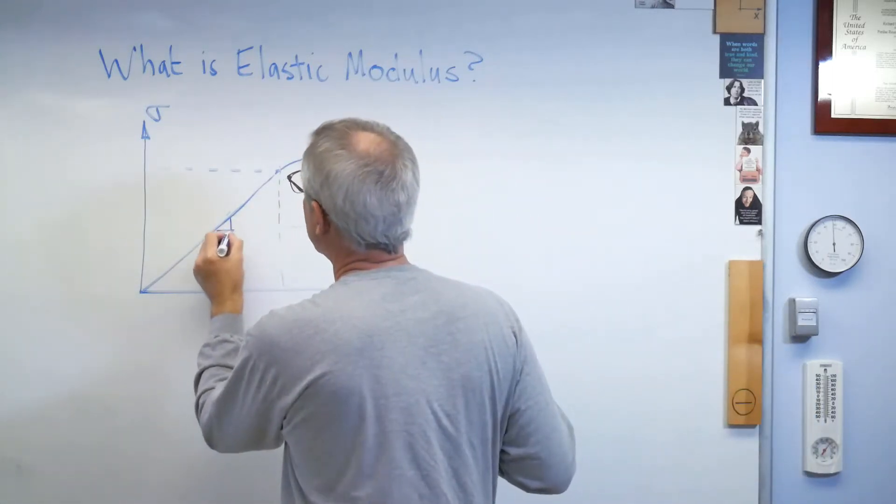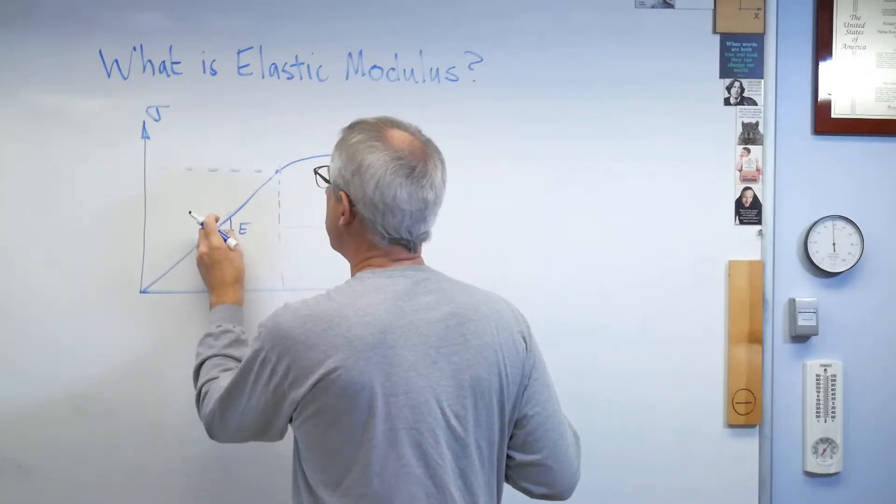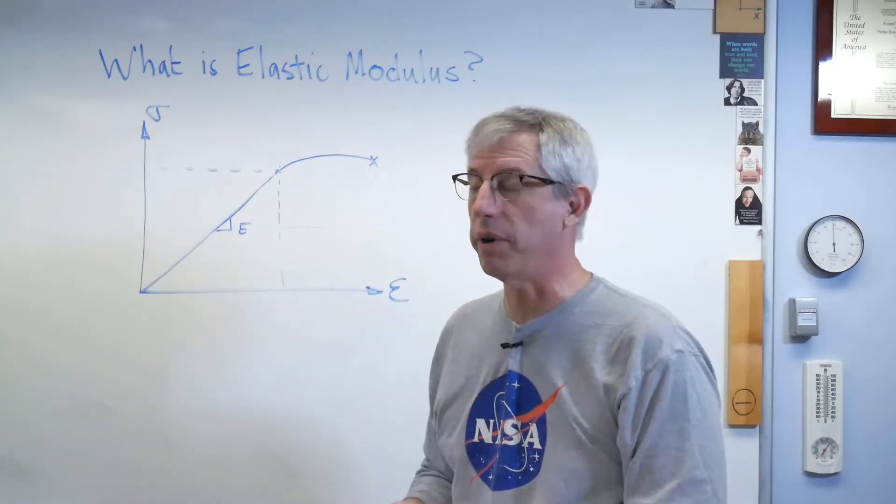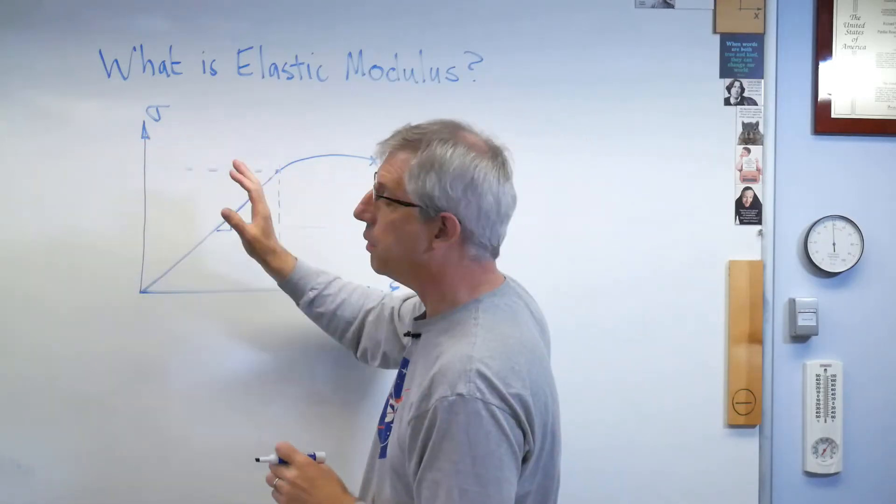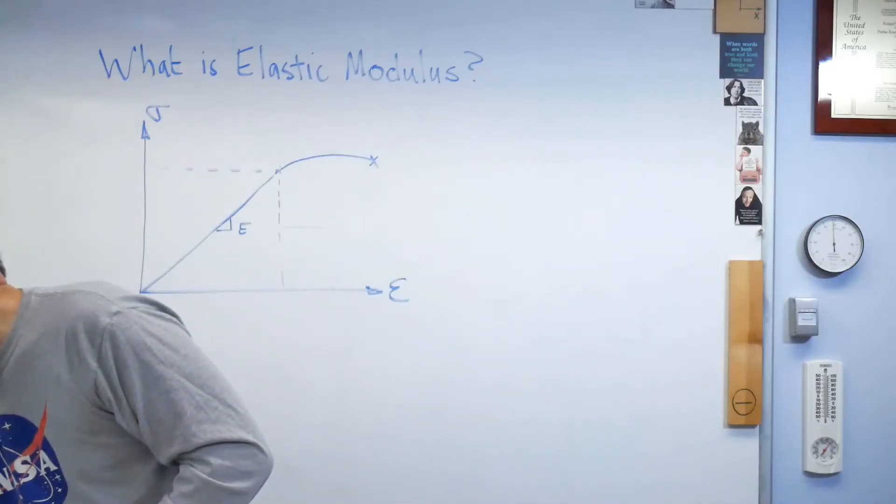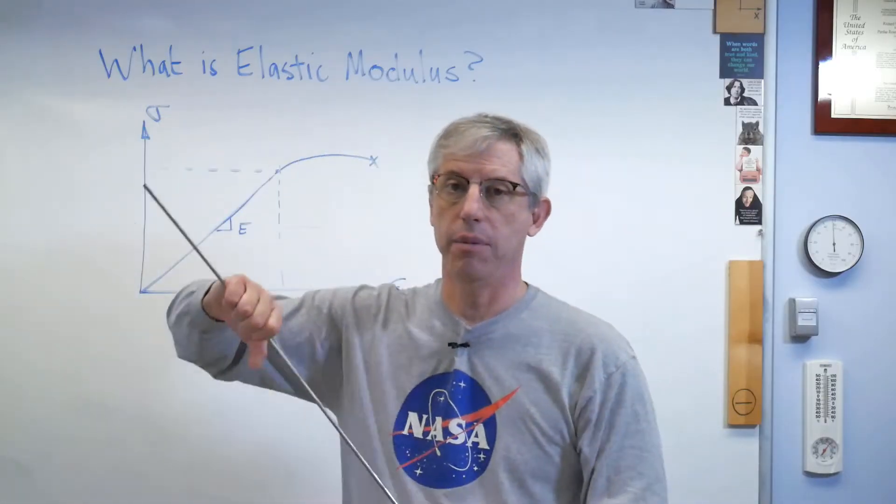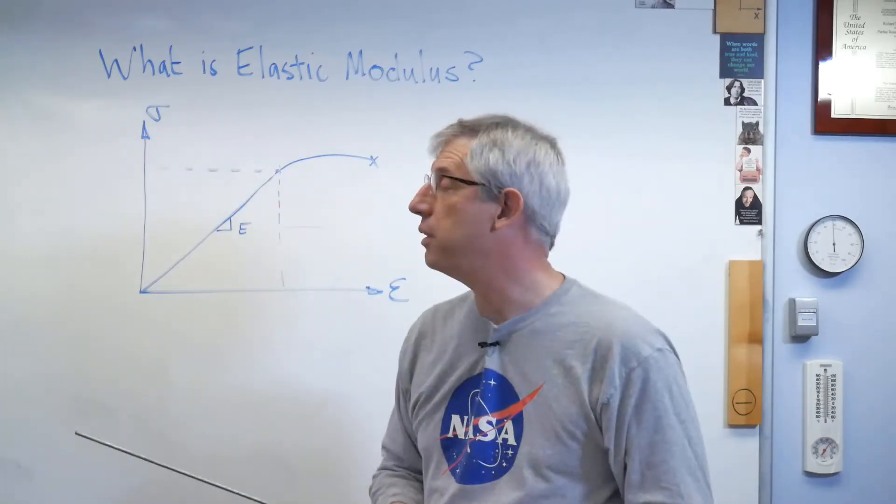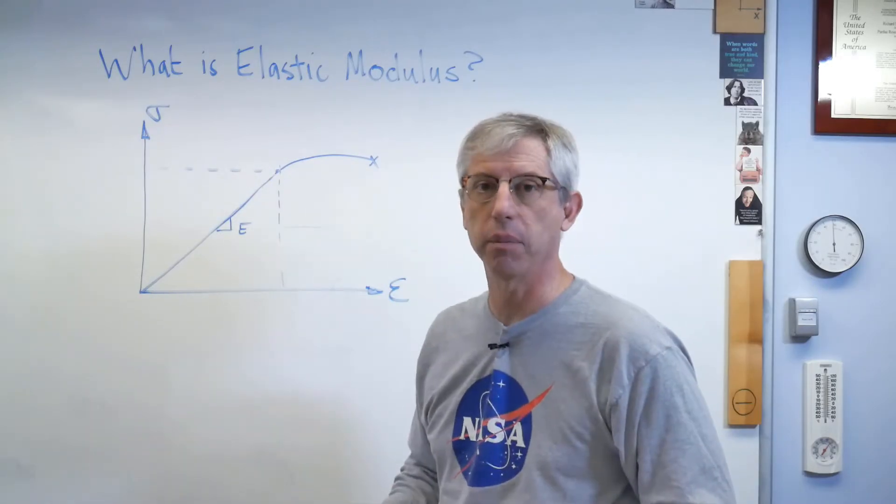The slope there is called E. That's the elastic modulus. This is the slope of the stress-strain curve while it's still straight. Over here, this is what's called the elastic region. If I take my piece of steel here and I pull, but I only pull up to about there and I let go, it'll return to its original shape. That's what elastic means.